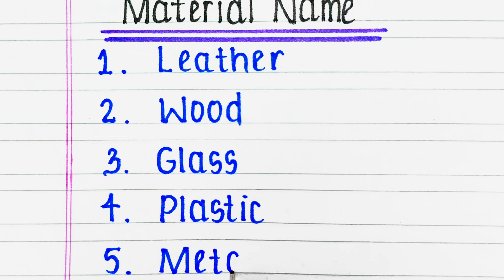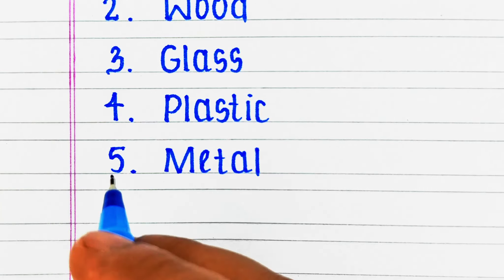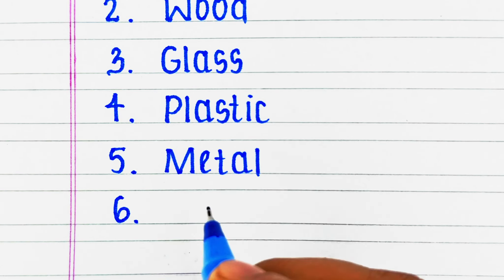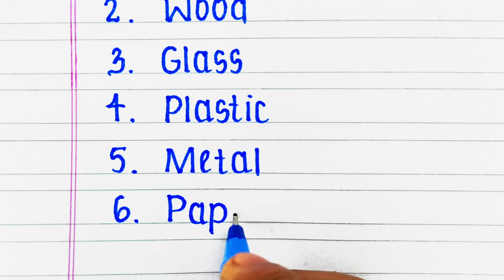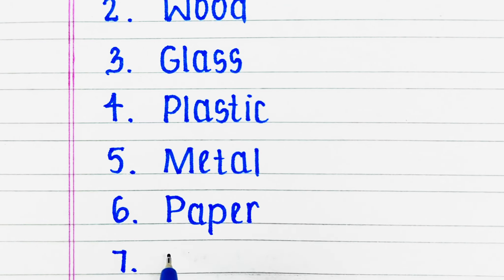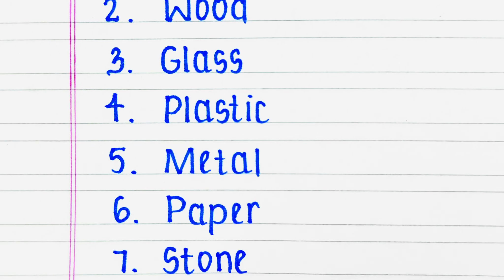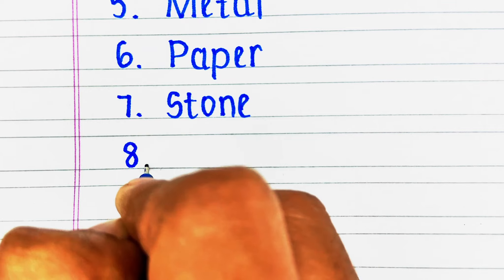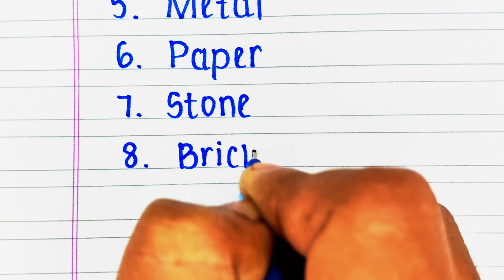Next one is M-E-T-A-L – Metal. Next material is P-A-P-E-R – Paper. On number 7, we have S-T-O-N-E – Stone. Next material is B-R-I-C-K – Brick.